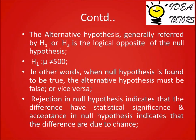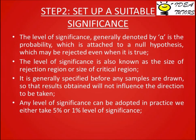The alternative hypothesis, generally referred to as H1 or Ha, is the logical opposite of the null hypothesis. For example, H1: mu is not equal to 500. When the null hypothesis is found to be true, the alternative hypothesis must be false, or vice versa. Rejection of the null hypothesis indicates that the difference has statistical significance, and acceptance of the null hypothesis indicates that the differences are due to chance.